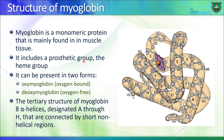Myoglobin is a monomeric protein composed of eight alpha helices, designated A through H, starting with the N-terminus. Between the alpha helices there are turns, so turns are also present as secondary structure, but the protein is mainly composed of helical regions or domains.